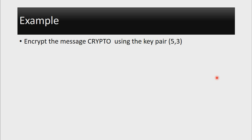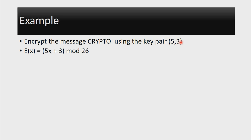Let us proceed with a simple example. Let's say we want to encrypt the message 'crypto' using the key pair (5, 3). This means that our A is 5 and our B is 3. In this case, the encryption algorithm becomes: E(X) = 5X + 3 mod 26.